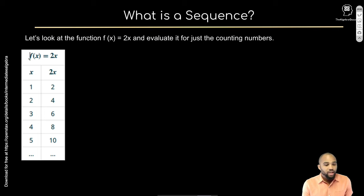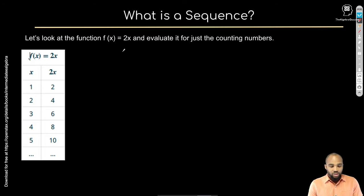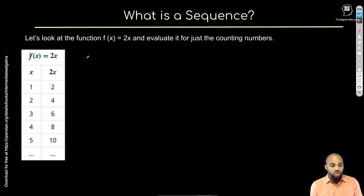Let's start with what a sequence is. Consider the function f(x) = 2x and evaluate it for the counting numbers — 1, 2, 3, 4. Evaluate just means plug in those values for x. So that gives us 2×1=2, 2×2=4, 2×3=6, and so on.